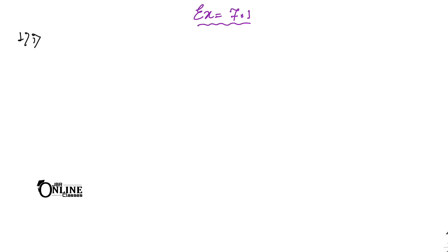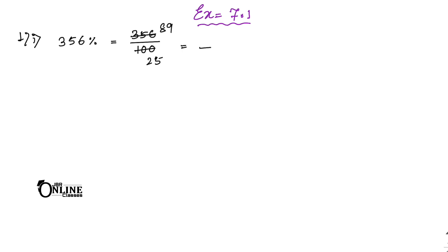Express the following percentages as fractions. The first one is 356%. That equals 356 divided by 100. Dividing by 4 simplifies it to 89 by 25. You can also change it into a mixed fraction.